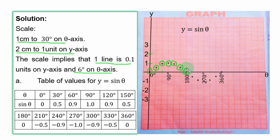For 180°, y = 0 — you plot that directly on the theta axis. When θ = 210°, y = minus 0.5, somewhere here. When θ = 240°, y = minus 0.5, somewhere here. When θ = 300°, y = minus 0.9, somewhere here. When θ = 330°, y = minus 0.5, somewhere here.